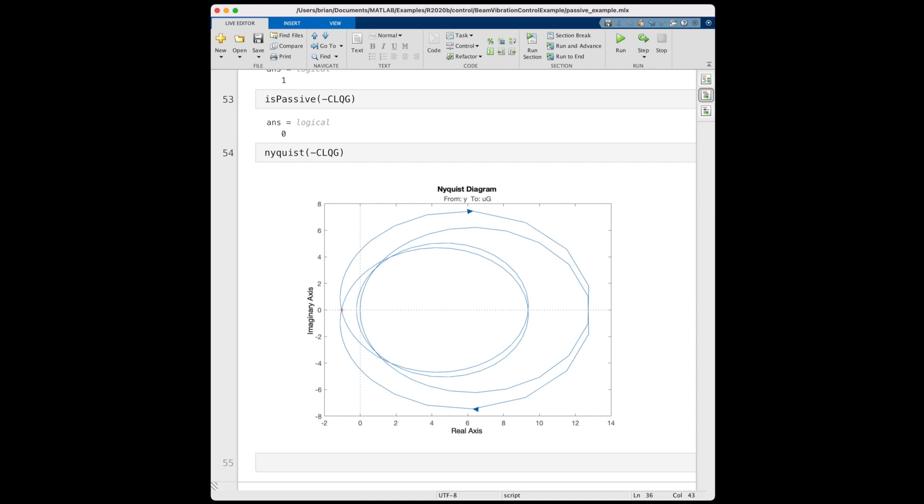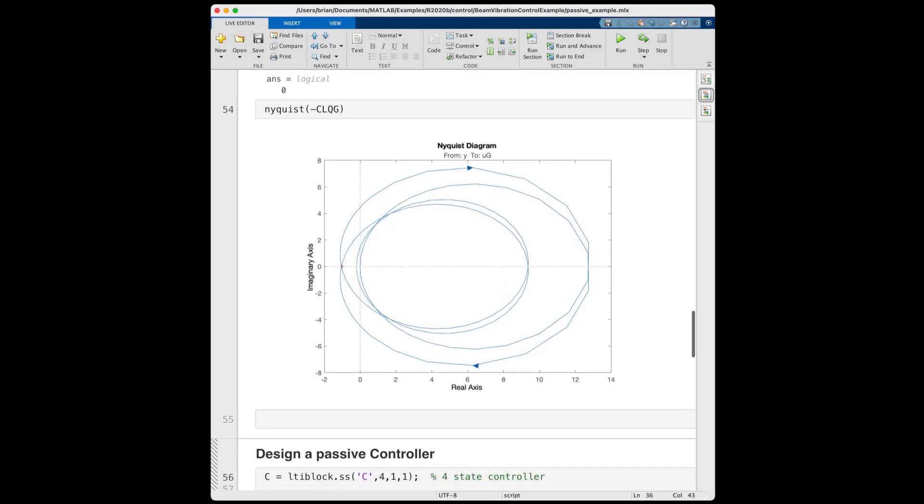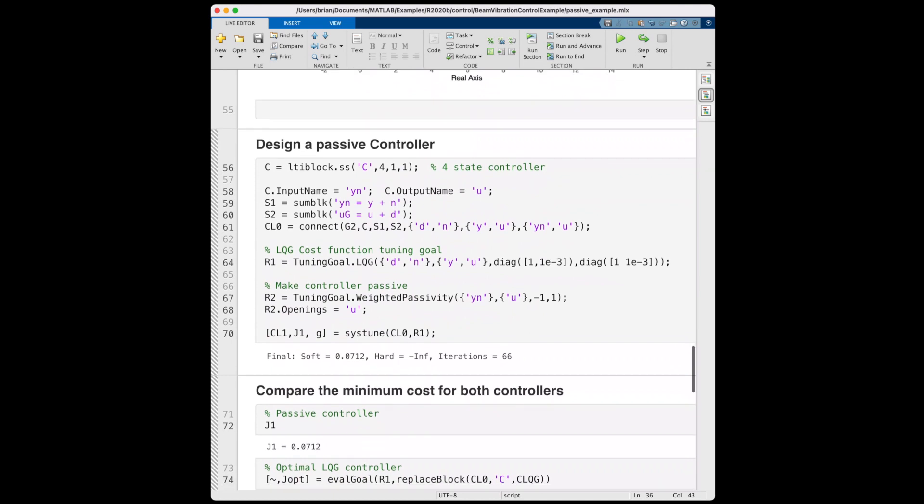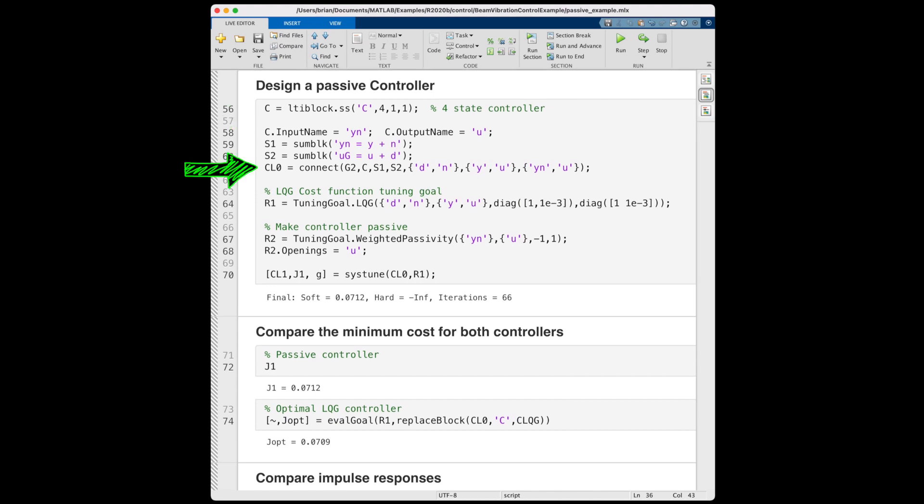Alright, so we have a plan now. If we design a passive controller, then the feedback system will produce a stable closed loop system, even if our model is off with the number of modes and mode parameters of the real system. And we can specify that we want a passive controller with the Systune function in MATLAB. Here, I'm setting up a four state controller, the same as the LQG controller, and then using the 2 mode model to tune it. I'm giving it two different tuning goals: one is to minimize the same LQG cost function that we used earlier, and two is to ensure that the negative of our controller is passive.